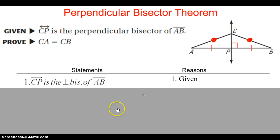We're starting with the given that CP, the line CP, is the perpendicular bisector of AB. So if you have a point on the perpendicular bisector, then you know it's equidistant from each endpoint.